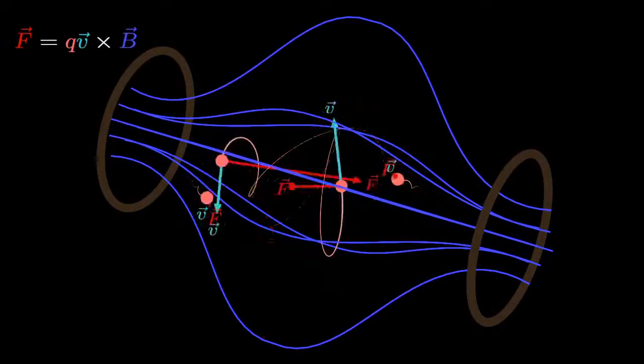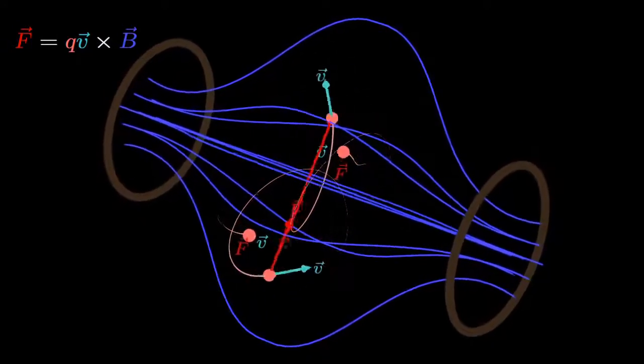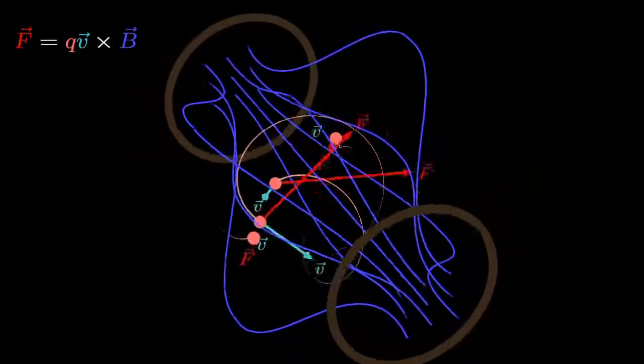A simple magnetic bottle can be produced by two magnetic dipoles, shown here as two coils. Electric charges can be trapped in the region between these two coils.